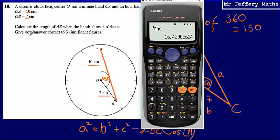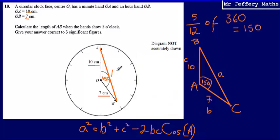So let's just check the question. It says give your answer correct to three significant figures. So correct to three significant figures, we're going to call that 16.4. So the distance between A and B is 16.4 centimeters.